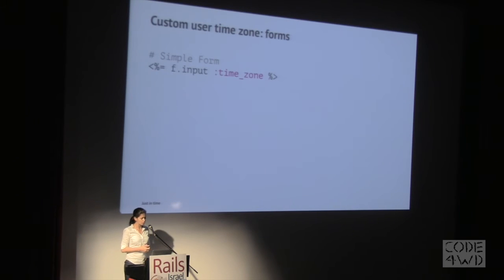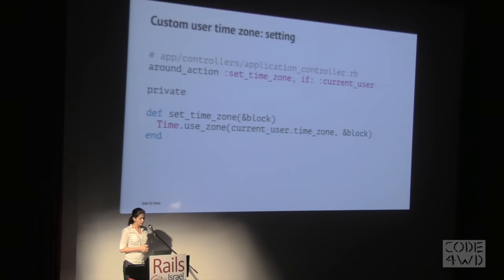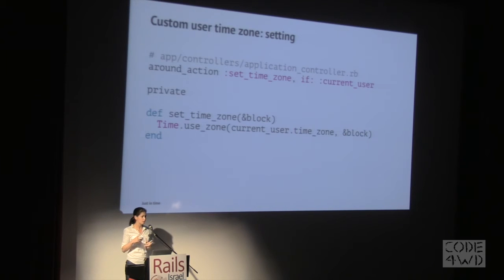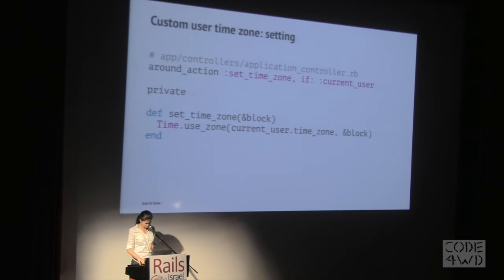When we use a form, if you use Simple Form, it has a helper method for time zone — which is just time_zone — and it gives you a select menu for all the time zones available in Rails. Once it's saved on the user, in ApplicationController we can use an around filter called set_time_zone if there's a current user, and we pass it a block which is the request. This sets Time.use_zone for the current user's time zone, and it's only valid for the duration of the request — after the request has finished, it goes back to the default UTC time. For displaying custom user time zones in views, we can just do whatever time it is in time zone for the current user's time zone.